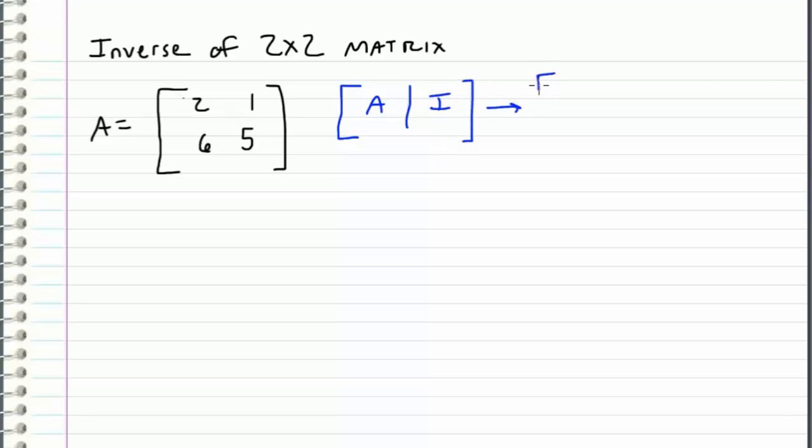Then we use row operations to reduce the left side to the identity matrix and what we're left with on the right side is A inverse.